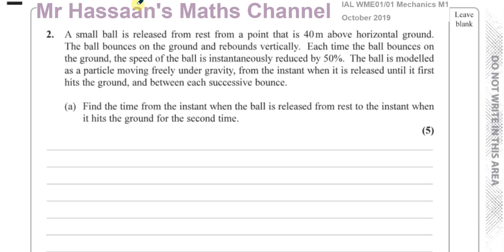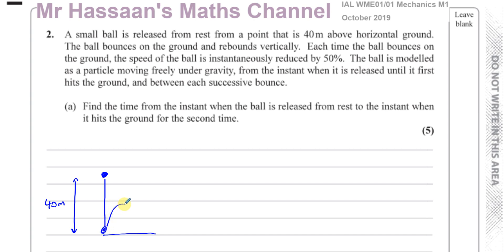We've got the situation where a ball is released from a height of 40 meters above the ground. It falls down to the ground, bounces up vertically, goes back up again, and then hits the ground again. Let's call the first position O, the origin, where it started from. Point 1 is where it bounced first, and point 2 is where it hits the ground after bouncing a second time.